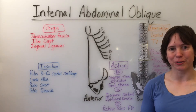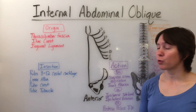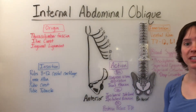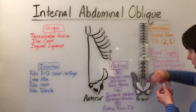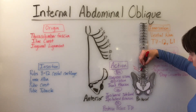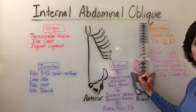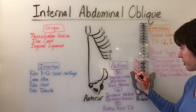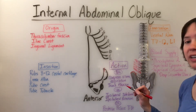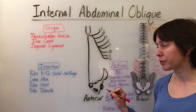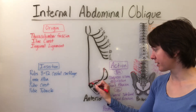For the internal abdominal oblique, its origins begin at the thoracolumbar fascia on the posterior side, the iliac crest — shown here posteriorly and anteriorly — and the inguinal ligament, shown here in dots.